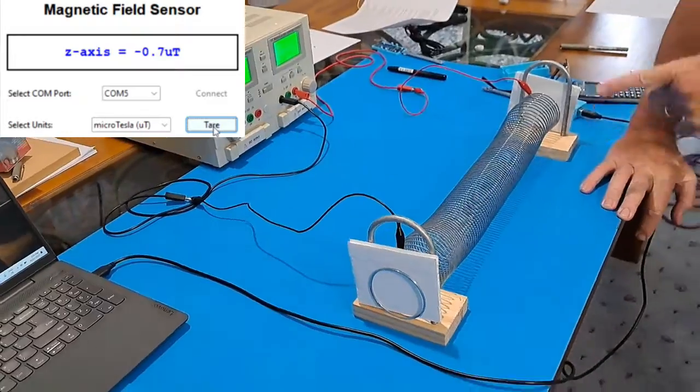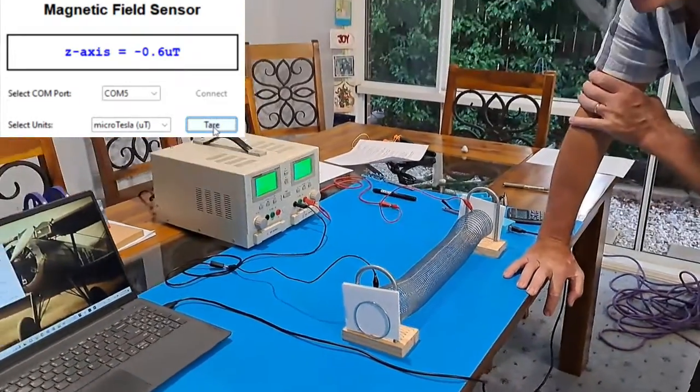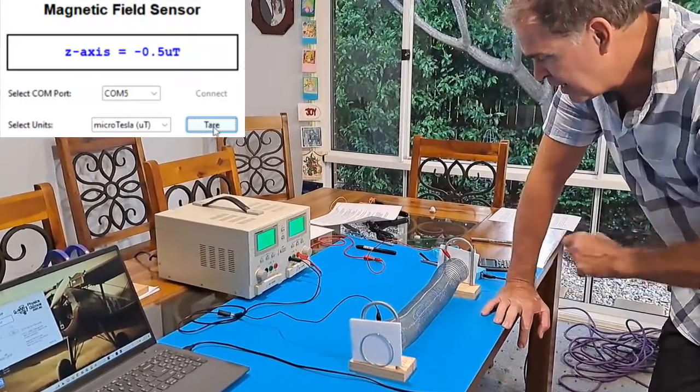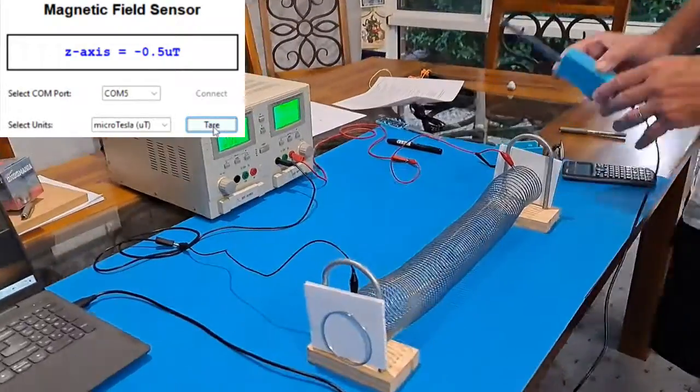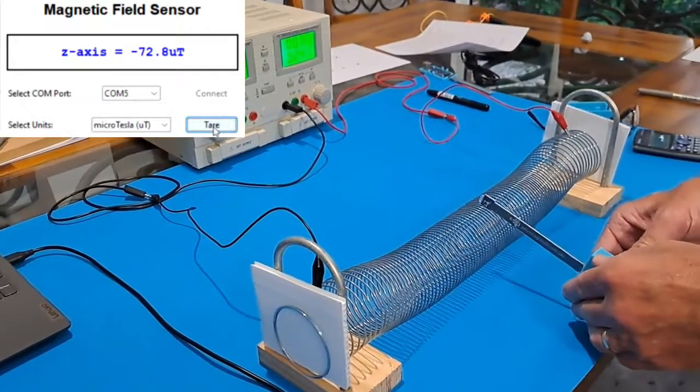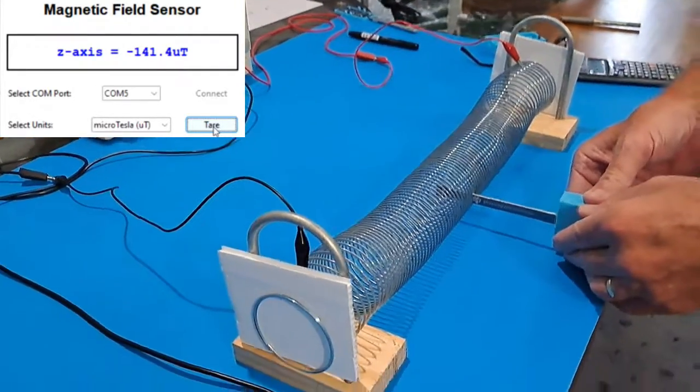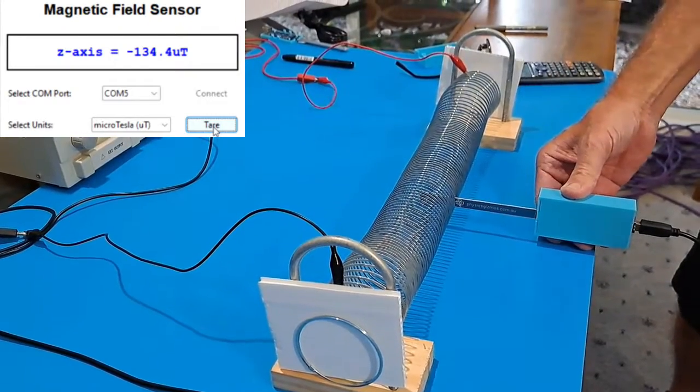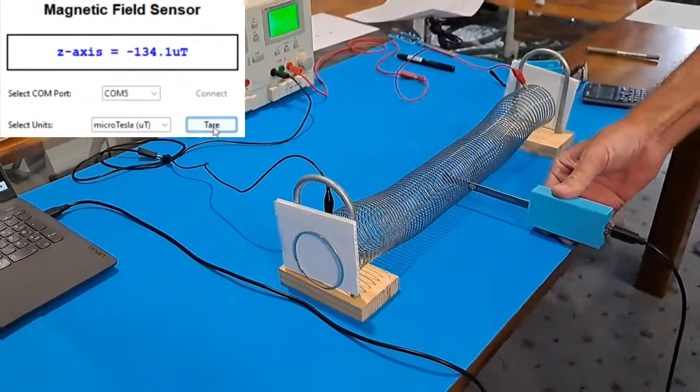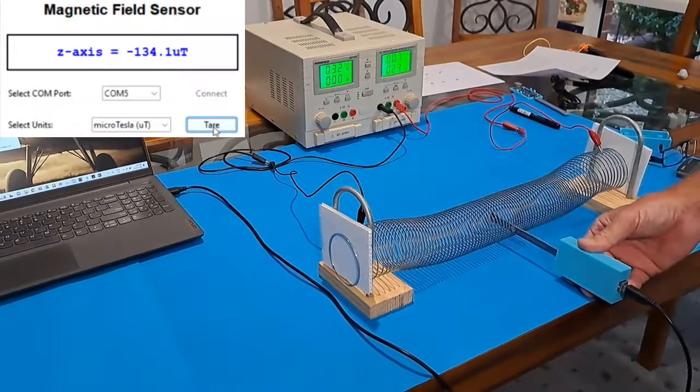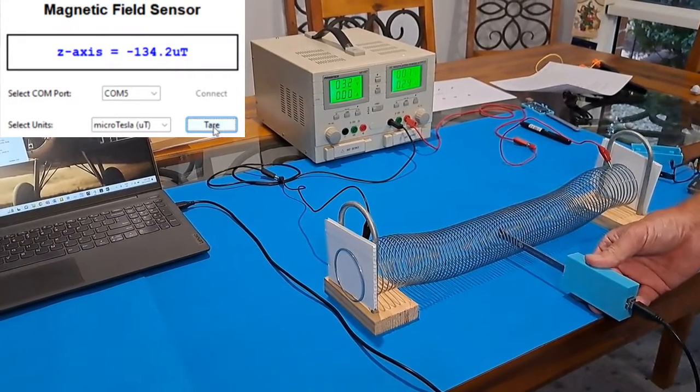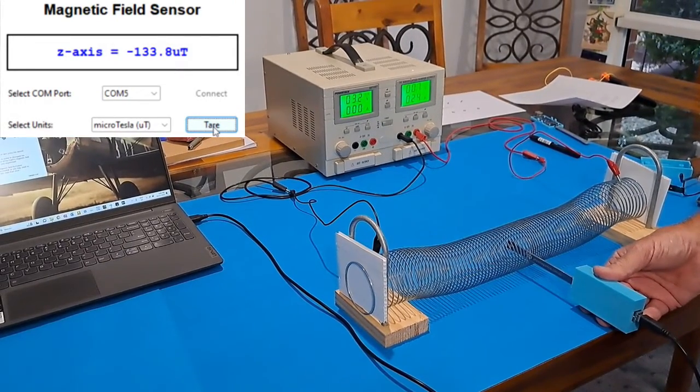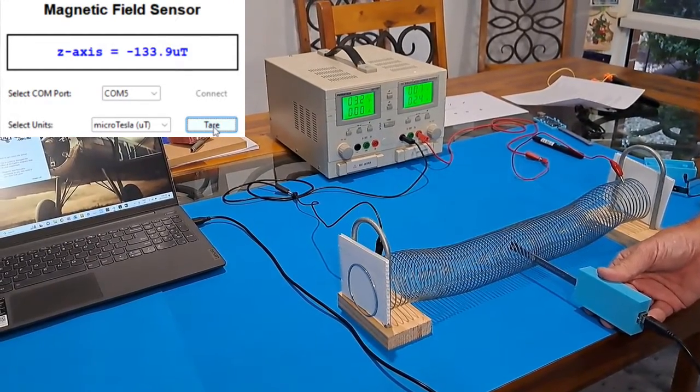So one of the suggested experiments in the Queensland syllabus is to measure the magnetic field inside a current-carrying solenoid. Here, I can slot this into the slinky there. The slinky is acting as a solenoid. I've got a current flowing through there, and then on my screen I can see the magnetic field inside the solenoid.